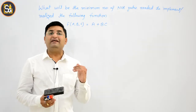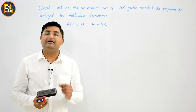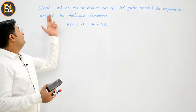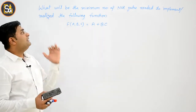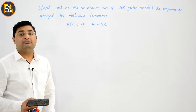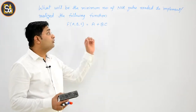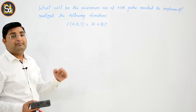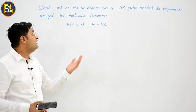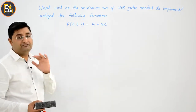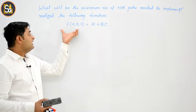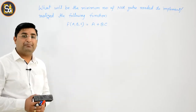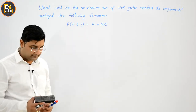Now we come to the next variety of problem: what will be the minimum number of NOR gates needed to implement or realize the following function f(a, b, c) = a + bc?